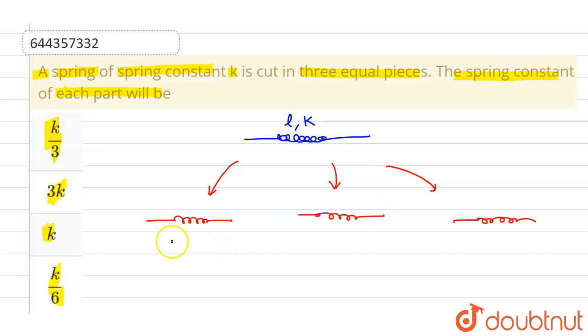Now let the new spring constant of each spring be k dash, and their length will be l by 3 since this l part is divided into three equal parts. So the new length of each piece will be l by 3.